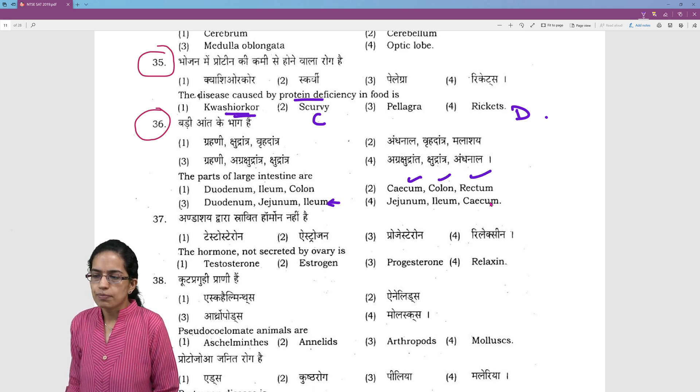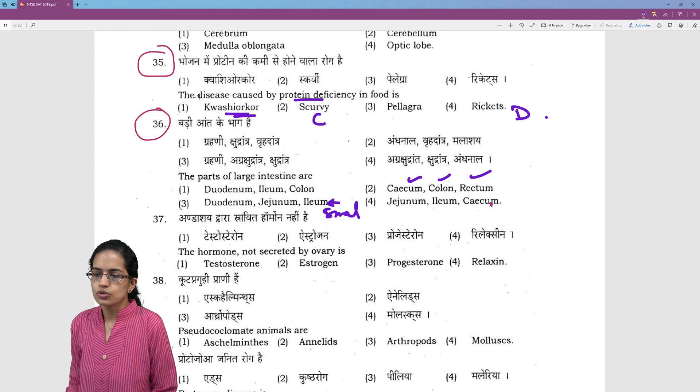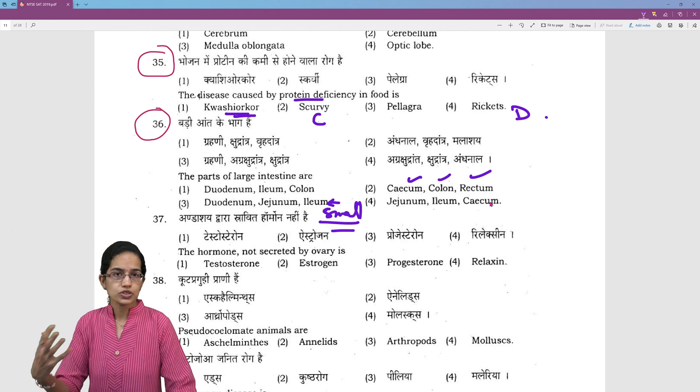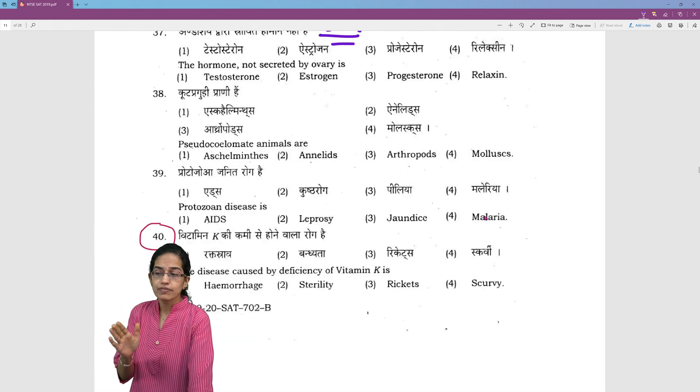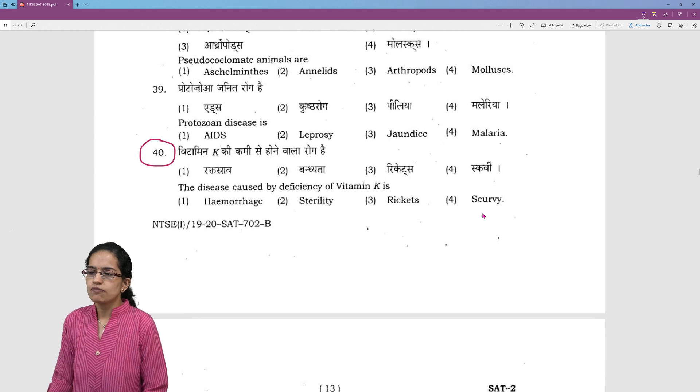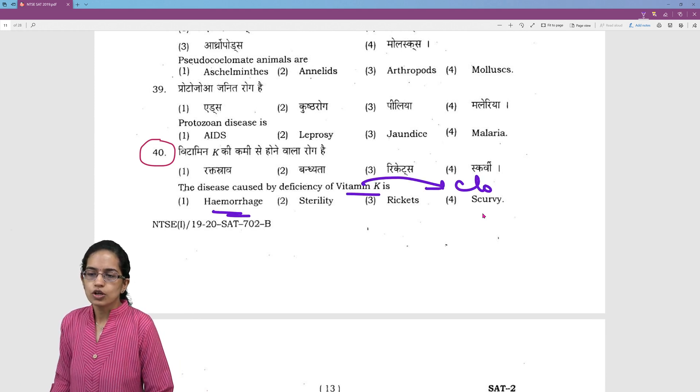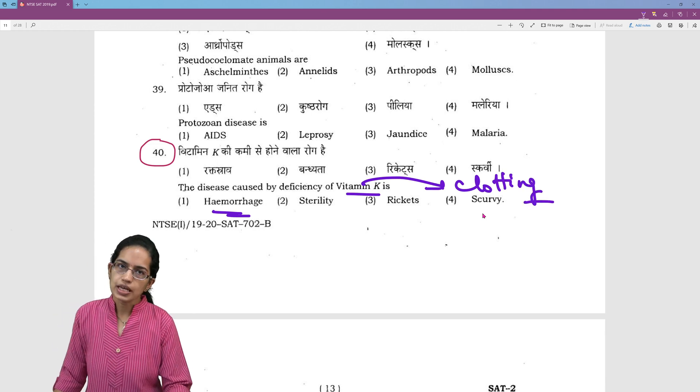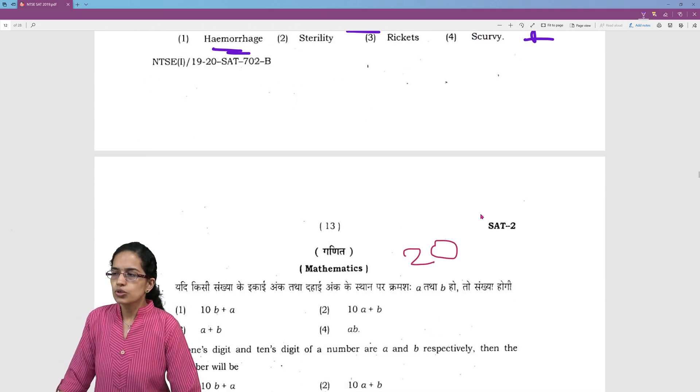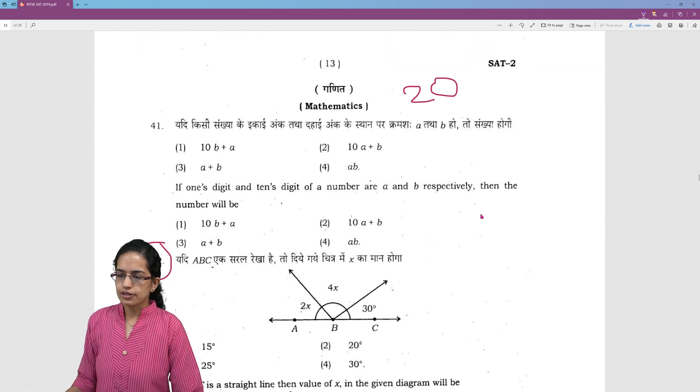Duodenum, jejunum and ileum are part of small intestine. So that is something that you need to know - the physiology and the basic concepts very fundamental. Deficiency of vitamin K leads to hemorrhage because vitamin K helps in clotting and if the blood does not clot there would be hemorrhage that would be seen. So that is again a very basic kind of question.